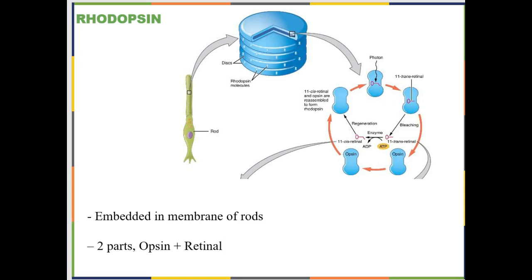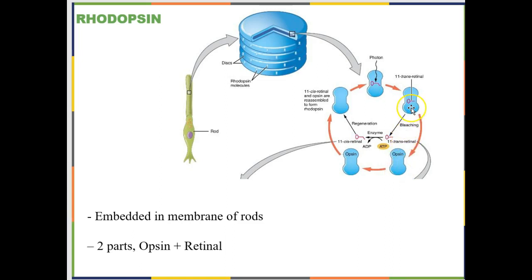Now talking about the biochemistry of how rods work. Inside all of your rods are stacks of membrane that have a pigment signaling molecule called rhodopsin embedded in the membrane. Rhodopsin is composed of two things: a protein called opsin and a chemical called retinol. The opsin is the barbell-looking structure and the retinol is the small key-like piece.